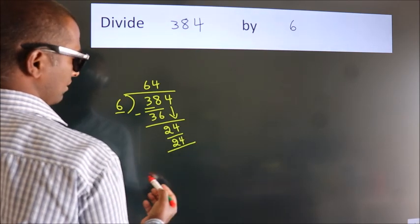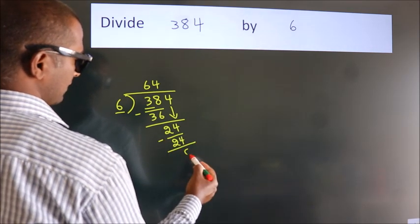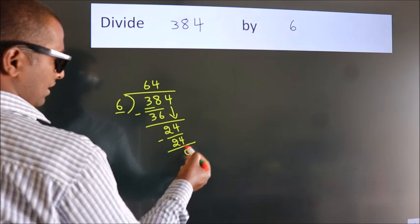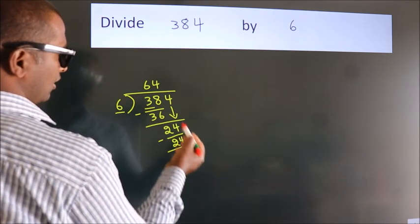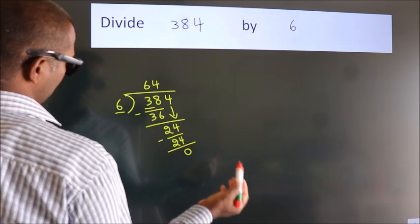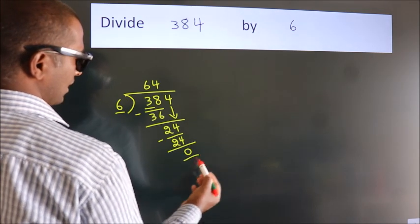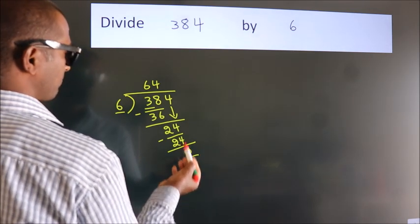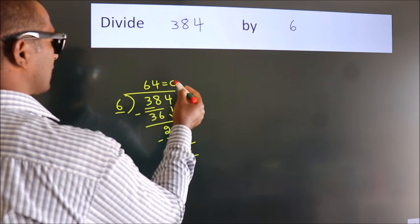Now we subtract, we get 0. After this, no more numbers to bring it down and we got remainder 0. So this is our quotient.